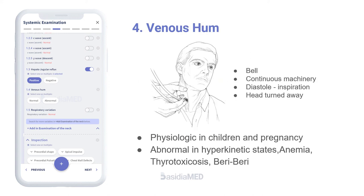Venous hum: It is heard using light pressure with the bell of the stethoscope. Cervical venous hum is a continuous machinery-like noise heard over the internal jugular vein, loudest in diastole during inspiration. It is accentuated by turning the head away from the side of examination. It is usually a physiological phenomenon seen in children and pregnancy. Unusual venous hum is noted in hyperkinetic states, anemia, thyrotoxicosis, beriberi, and intracranial AV fistula.